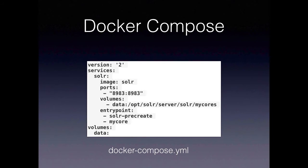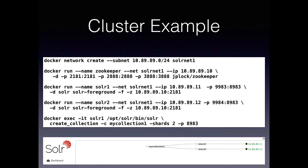You can wrap all this up in a Docker Compose file. Here we see we have one volume defined at the bottom called 'data', and one service defined at the top called 'solr', which is the Solr image running with a specified port mapping, using the volume mounting we did from the command line before, and running 'solr-precreate' to create the core. Here we have a slightly more exciting example — let's actually try this out.